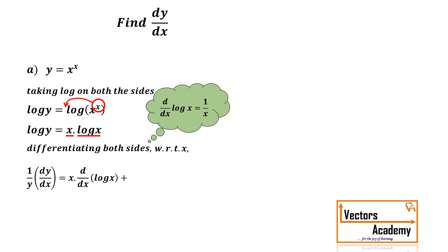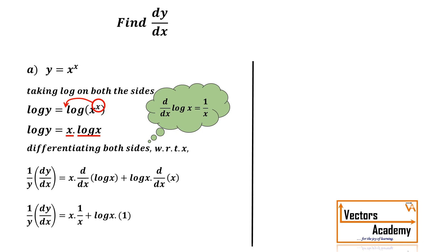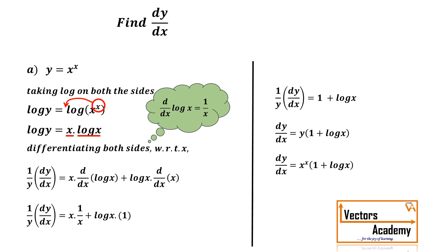On the right hand side there are two functions in multiplication, so we apply the uv rule: x into derivative of log x plus log x into derivative of x. Simplifying: x times 1 by x plus log x times 1, giving 1 by y dy by dx is equal to 1 plus log x. So dy by dx is equal to y into 1 plus log x. Since y is x raised to x, the final answer is dy by dx is equal to x raised to x into 1 plus log x.